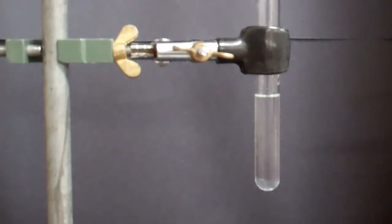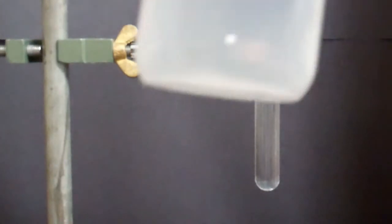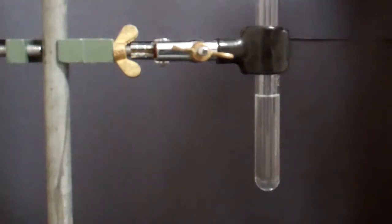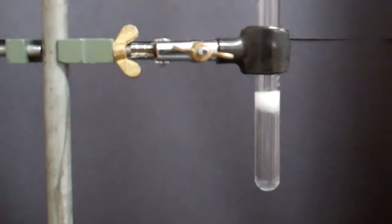Then add 3 drops of the barium chloride. Notice that immediately we get this white precipitate. You can stir that.